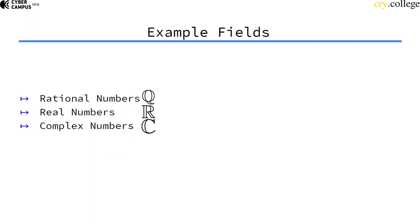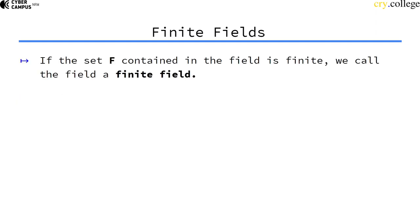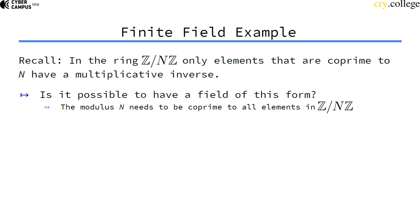Example fields are the rational numbers, real numbers, or complex numbers. If such a field, if this underlying set is finite, not infinitely big, then we call this field a finite field.